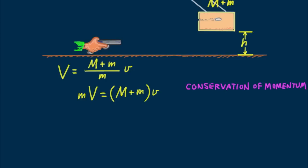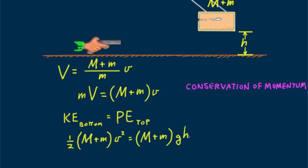So the initial kinetic energy of the block upon absorbing the fired bullet will equal the potential energy of the block at the top of its swing. We write this as kinetic energy bottom equals potential energy top, or one half mass combination times little v squared equals mass combination times gh, where g is the acceleration due to gravity and h is the measured height to which the block rises.